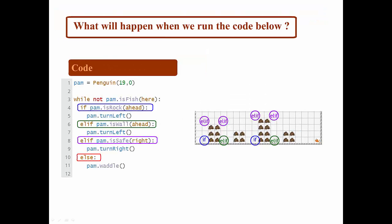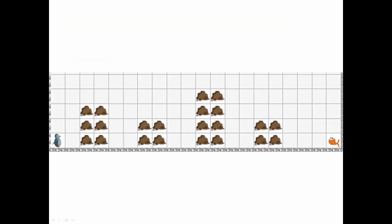So let's just get a final example of how IF-ELIF-ELSE will work on this map. As we run the code, we see that it seems to be working successfully until Pam gets to the corner, where she gets stuck in rotation.